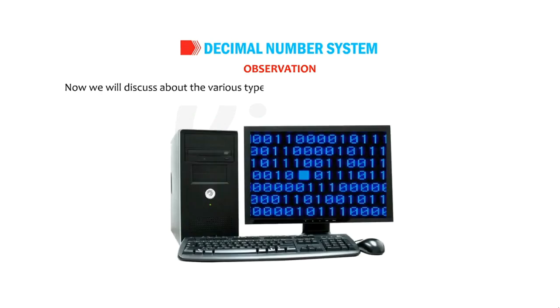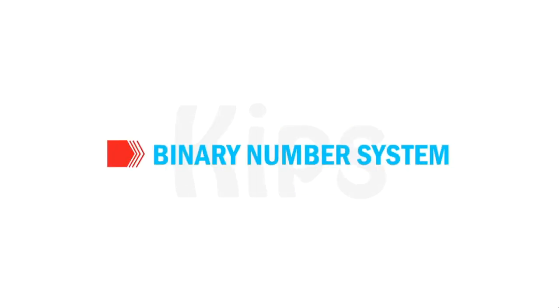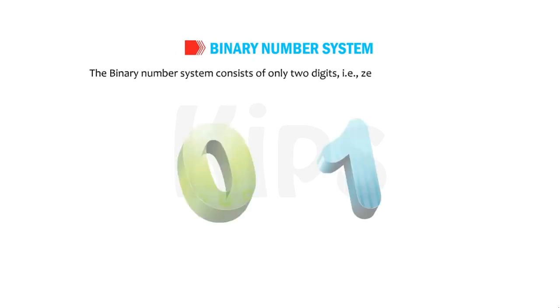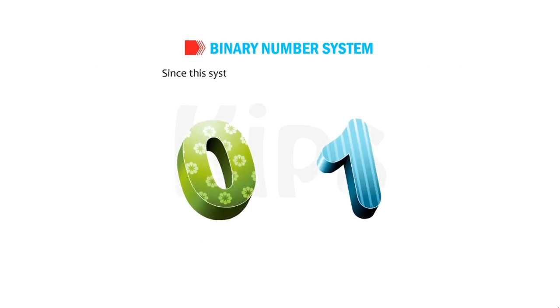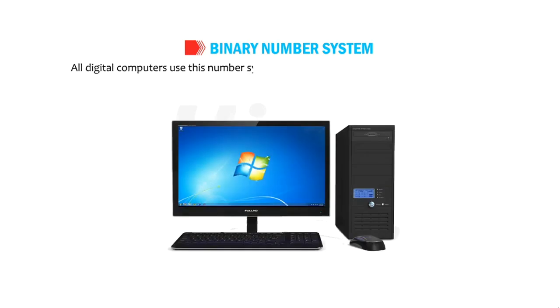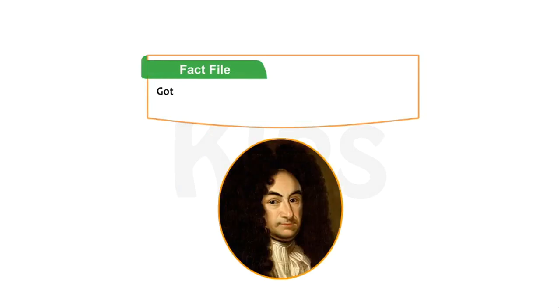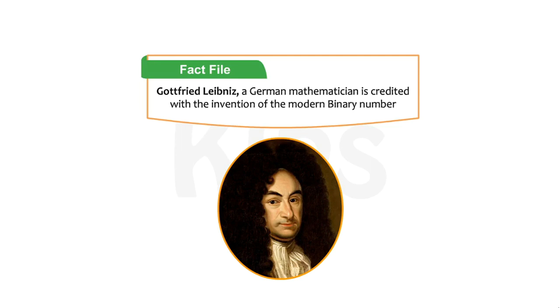Now we will discuss the various types of number systems used in a computer. Let's find out about the binary number system. The binary number system consists of only two digits, i.e. 0 and 1. Since this system uses two digits, it has the base 2. All digital computers use this number system and convert the input data from the decimal format into its binary equivalent. Gottfried Leibniz, a German mathematician, is credited with the invention of the modern binary number system.